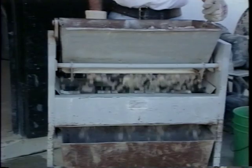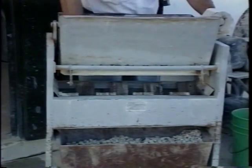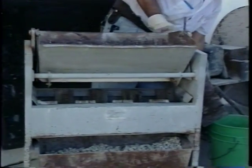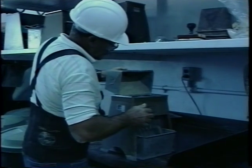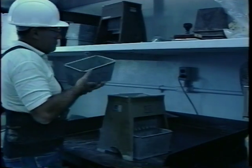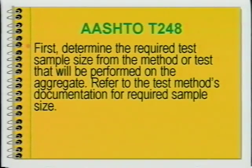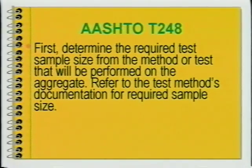There are a number of methods for reducing the size of field samples to testing size. The proper method to use depends upon whether your samples are of coarse or fine aggregate. If your samples are fine aggregate, then the proper reduction method depends on the moisture content of the fine aggregate samples. First, determine the required test sample size from the method or test that will be performed on the aggregate. Refer to the test method's documentation for required sample size.